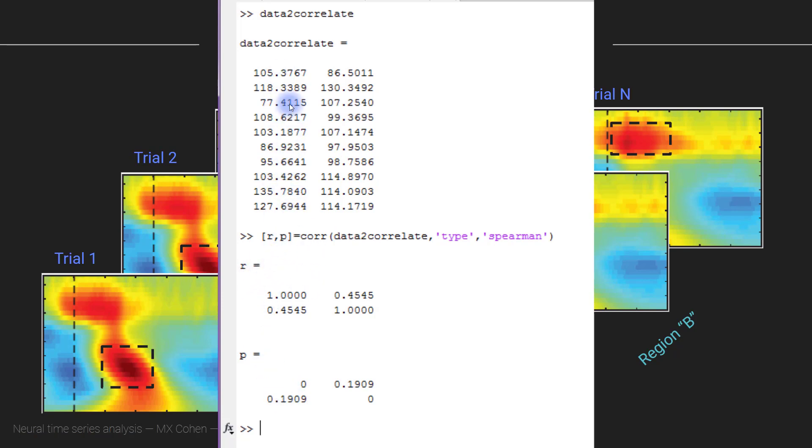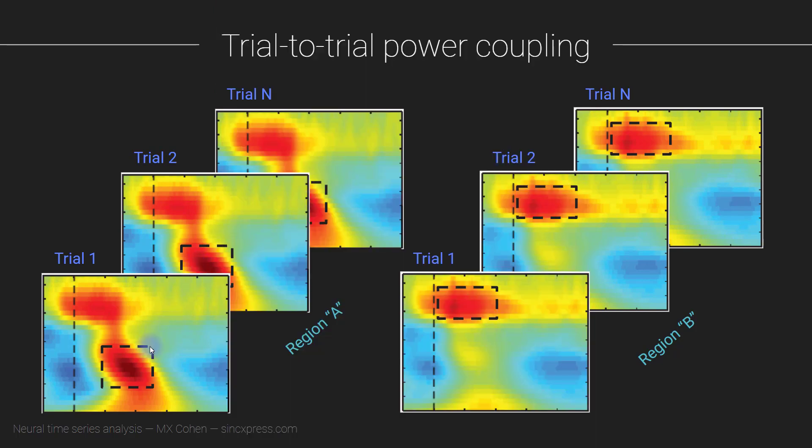And then the idea is that if this correlation coefficient is, for example, positive and also statistically significant—which is not in this case, but that's okay—if this correlation is significantly positive, then that would mean that trials where power is increased in electrode A, there's also an increase in power in region B. And this is an interesting analysis. You also have a lot of flexibility here because not only can these come from different frequency bands, which is similar to the envelope correlations that I showed in the previous slide, but they can also come at different time windows.